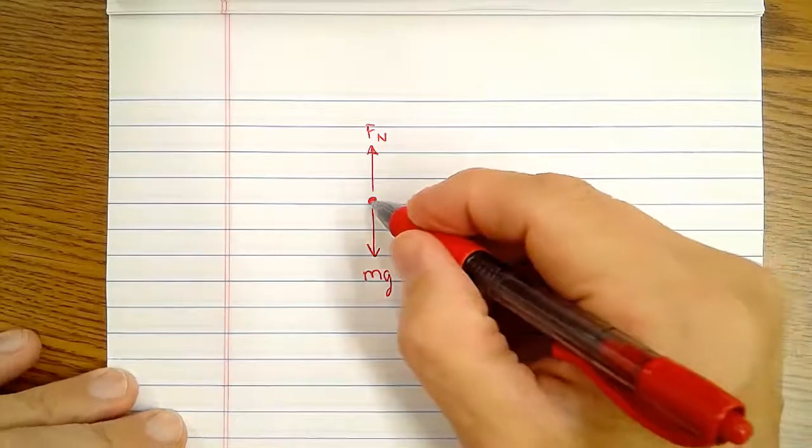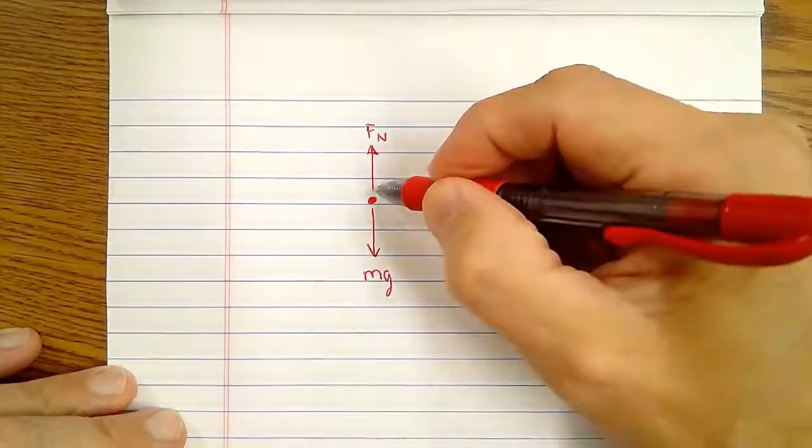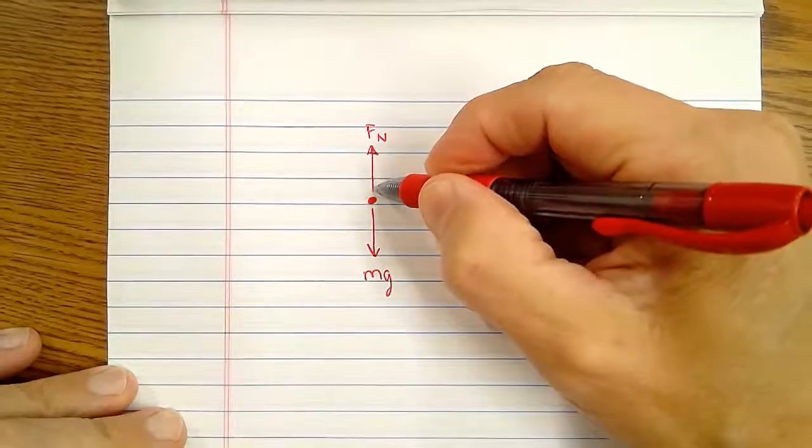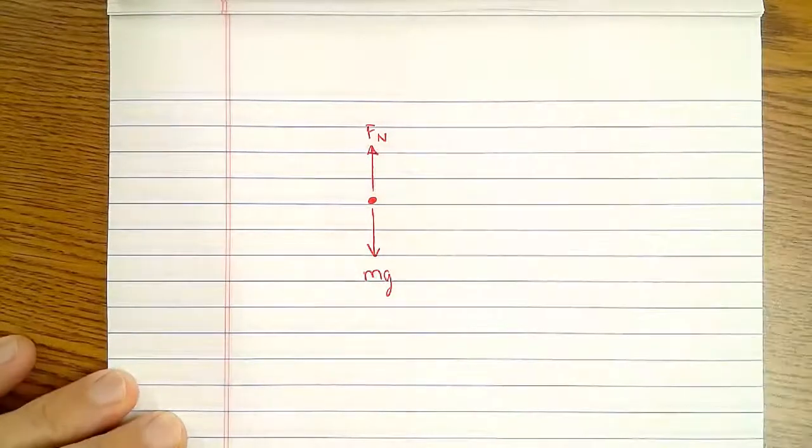If you think about a person standing on the Earth, normally we say gravity's pulling down and the force of the ground pushing up, the normal force, is going this direction. Those two forces are equal because you're not accelerating.